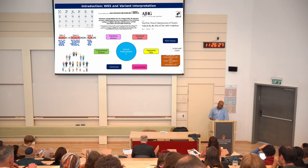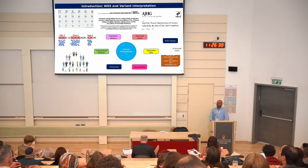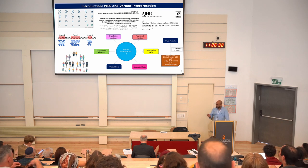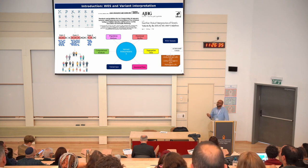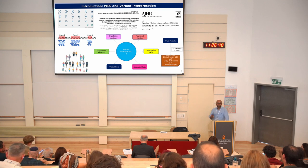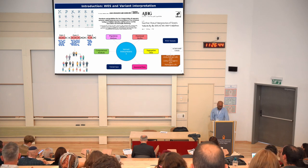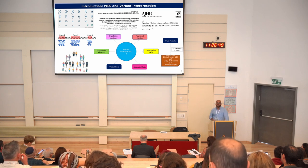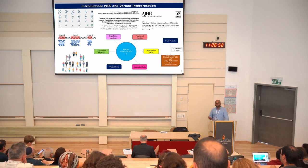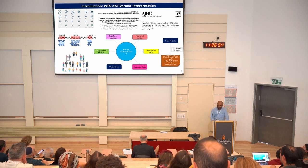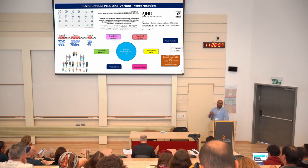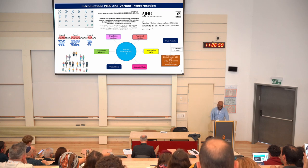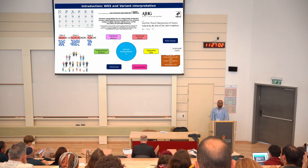Due to that, in 2015, the American College of Medical Genetics and Genomics published guidelines to annotate and interpret sequence variants as likely pathogenic, benign, etc. Some tools were published following the ACMG guidelines, like InterVar, TAPES, and CHARGER. What they do is annotate different kinds of information and ultimately interpret the sequence variants.